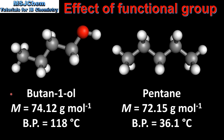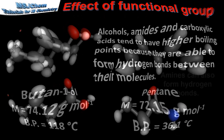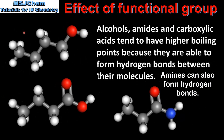Next we look at the different types of intermolecular forces that different organic compounds have. The first examples are alcohols, amides, and carboxylic acids. These molecules tend to have higher boiling points because they are able to form hydrogen bonds between their molecules. Each molecule has either an oxygen bonded to a hydrogen or a nitrogen bonded to a hydrogen, giving them the ability to form hydrogen bonds. For this reason, these compounds tend to have higher boiling points than other molecules with similar molar masses.